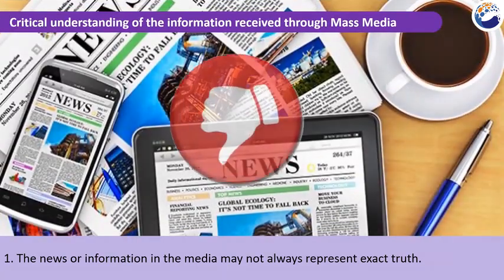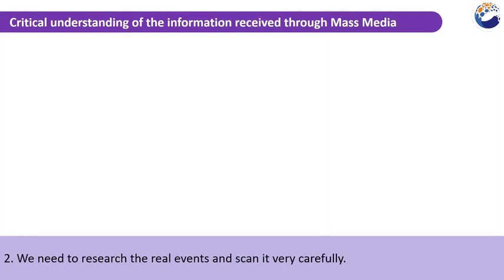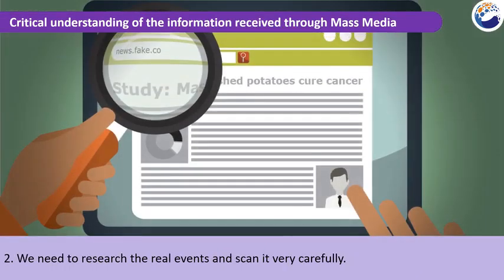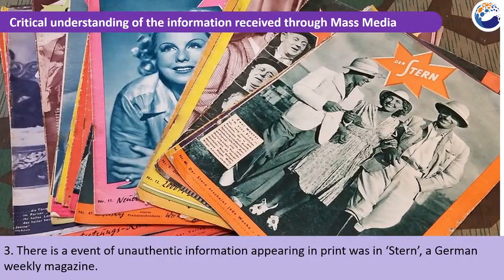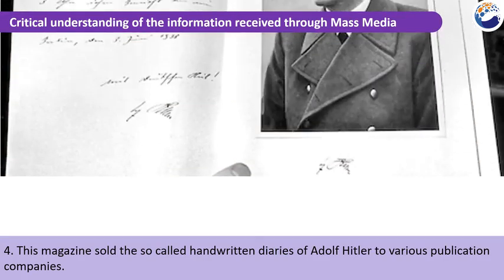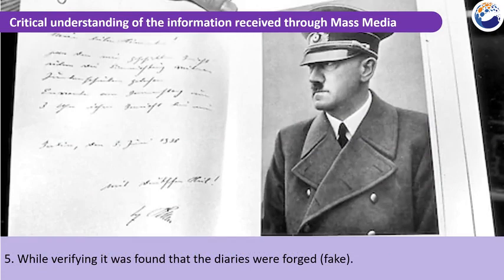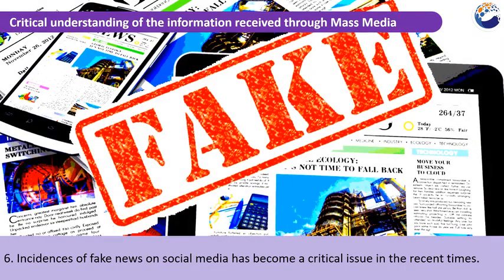Critical understanding of the information received through mass media. The news or information in the media may not always represent the exact truth. We need to research real events and scan them very carefully. There is an event of unauthentic information appearing in print — in Stern, a German weekly magazine, which sold so-called handwritten diaries of Adolf Hitler to various publication companies. While verifying, it was found that the diaries were forged. Incidents of fake news on social media have become a critical issue in recent times.